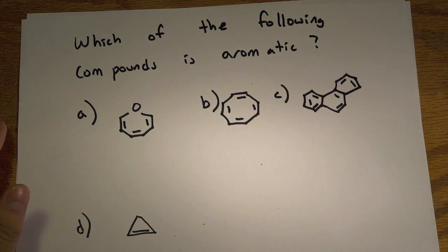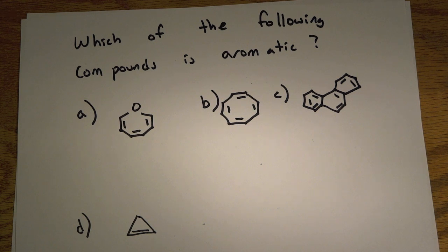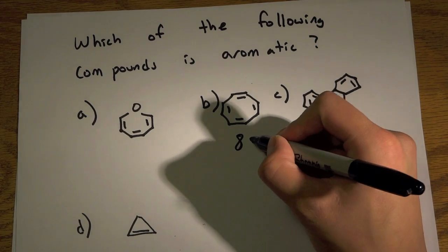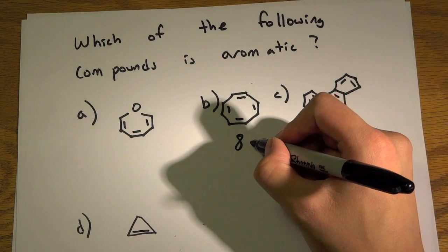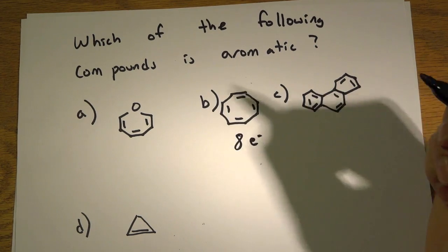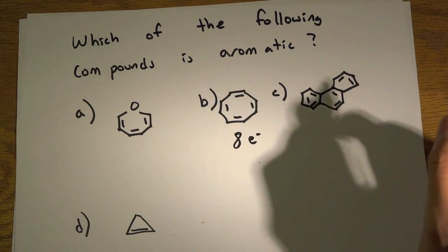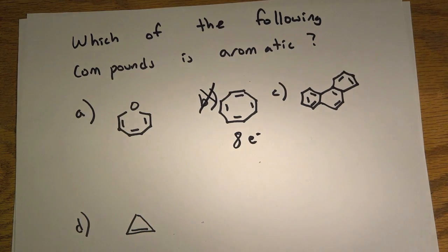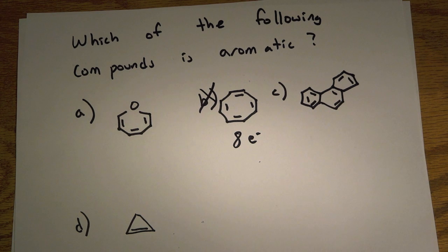So let's go back to these and try to go through each one. First, let's check the 4n plus 2 rule. This first option has 8 pi electrons. We said before that 8 does not satisfy Hückel's rule, so we'll cross this one out — because 4n plus 2 equals 8 gives n as a fraction.